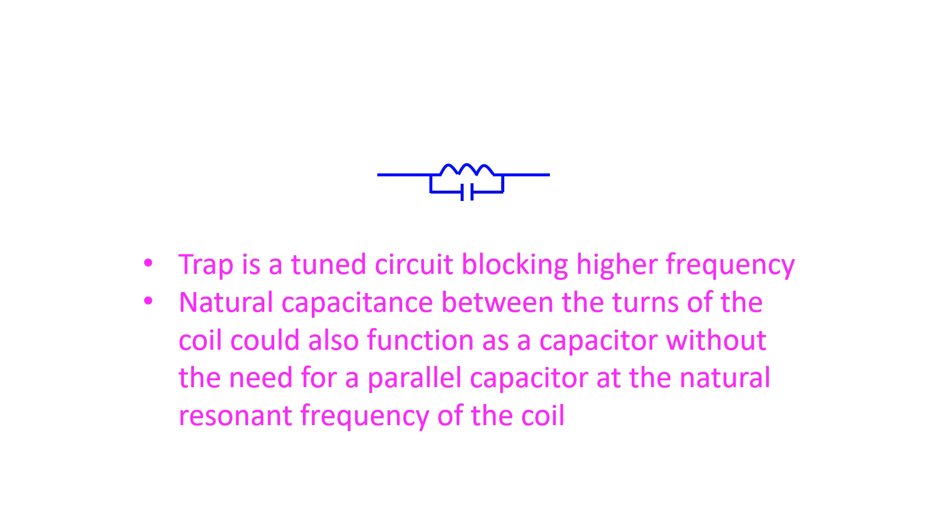Coils can have a capacitance because of the conductors being parallel to each other. If that capacitance is matched to the inductance, it is possible to have traps without adding an additional capacitor in parallel to produce a tuned circuit, depending on the frequency and design of the coil.